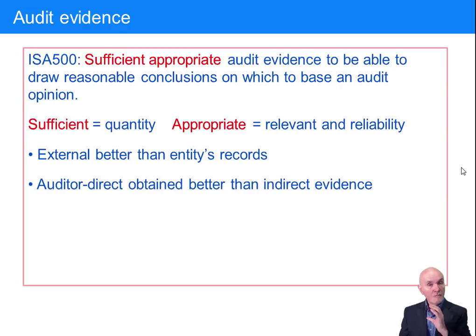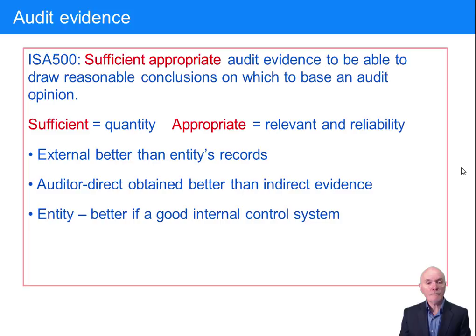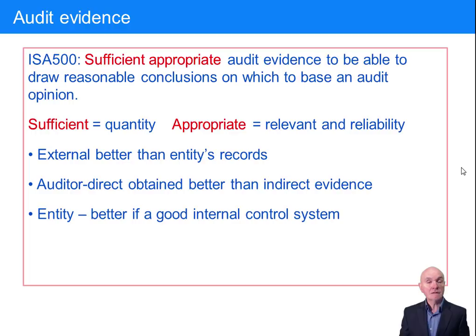Evidence or documentation within the client is much more reliable if there's a good internal control system. The internal control system will prevent, detect and correct errors. Therefore, when you look at figures in a company with a good internal control system, there's much more chance that they are correct. In a sloppy system where nobody cares, you have really no idea whether a figure is right — it could easily be wrong and no one would be any the wiser.